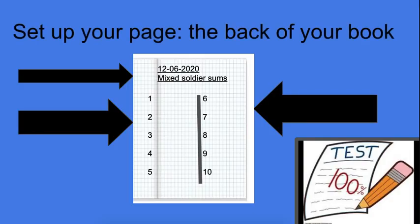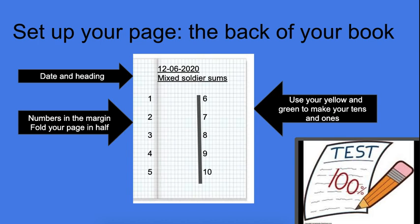Let's set up our page. At the back of your quad book, you are going to write the date and then the heading which is 12-06-2020 and the heading is mixed soldier sums. Then you are going to put numbers down the margin and you are going to fold your page in half and put the other numbers there.